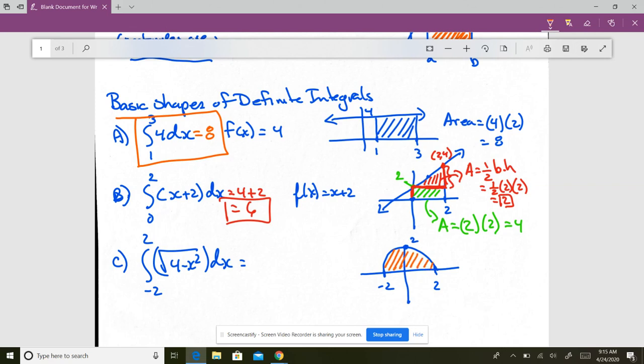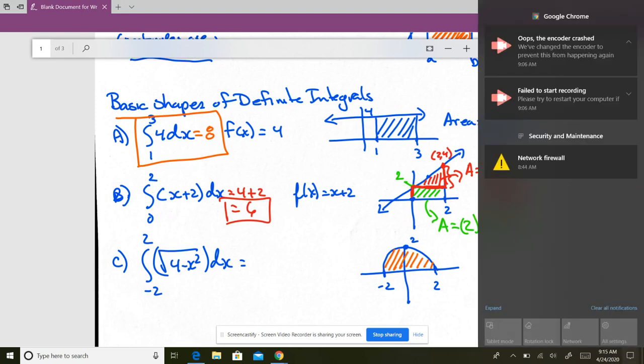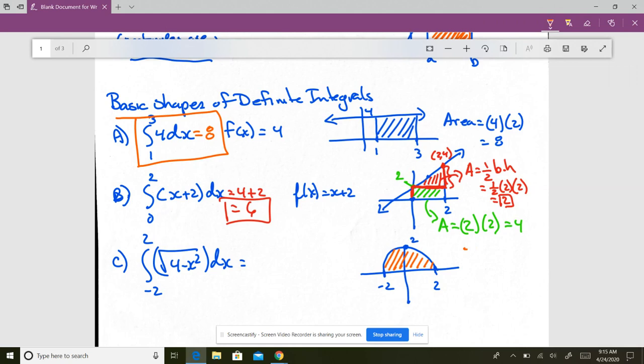We can just go the area of that semicircle. The area of a circle is pi r squared. And since it's half a circle, we'll just put half of it. It's one half pi. What's our radius? It's 2 squared, which is 2 pi. So the value of that is 2 pi. And leave it as pi. Don't write 2 times 3.14.